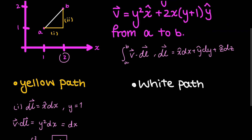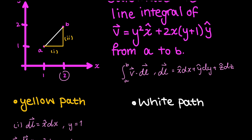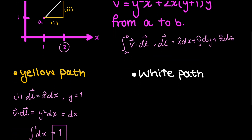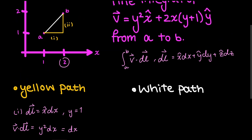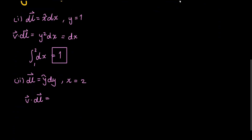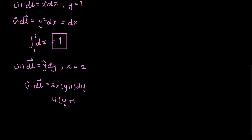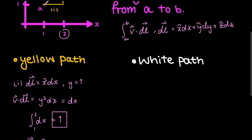The second piece is the vertical line segment. In this case, I'm changing only with respect to y, and x is held constant. So dl is y-hat dy, and x is constant equal to 2, as we can see from the figure. Writing v·dl, going back to my vector function, gives 2x(y + 1) dy. Because x equals 2, this becomes (4y + 1) dy.